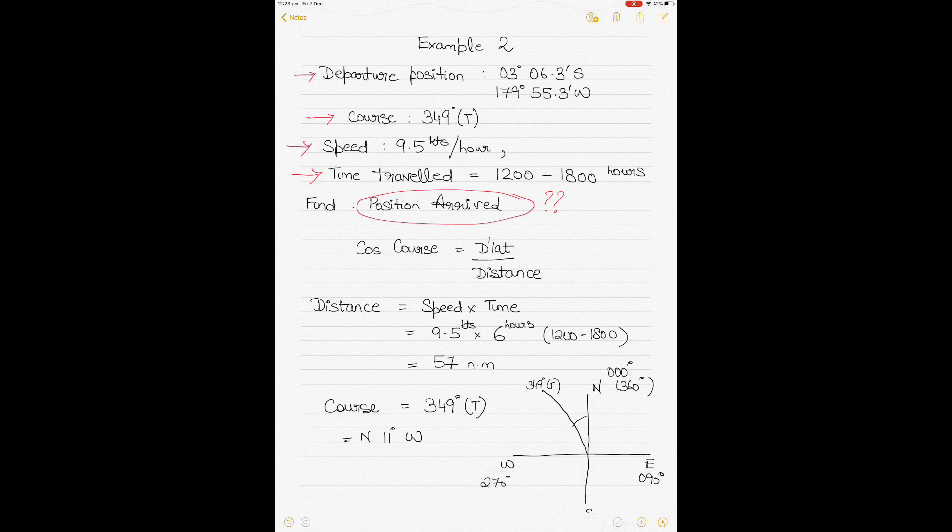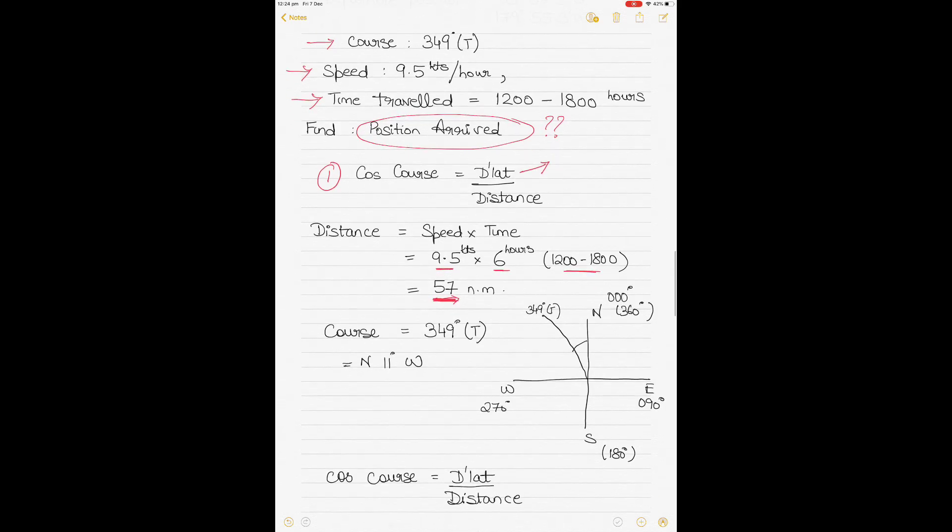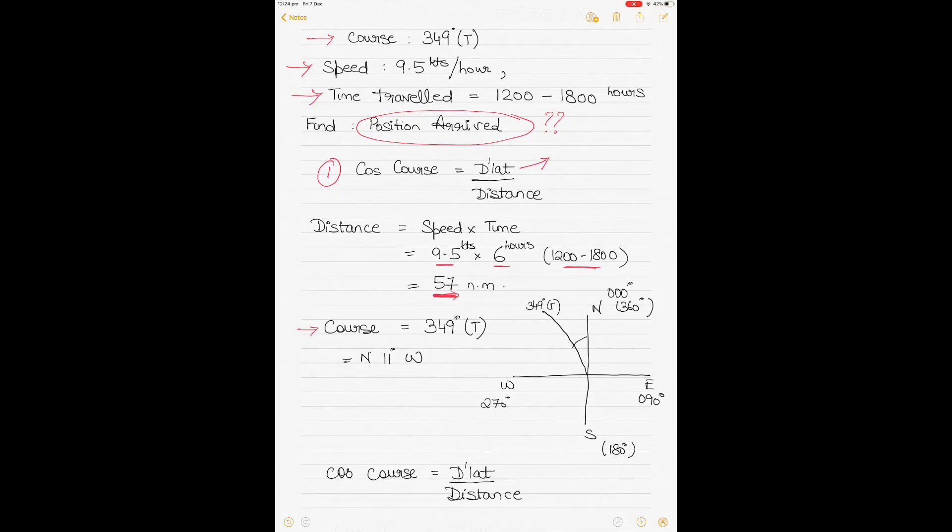Let's first start with cos(course) equals d lat over distance. We take this formula because we need to find the d lat. If we get the d lat, we can apply it to the departure position and find out our port of destination latitude. First, let's calculate the distance. Distance equals speed multiplied by time. Speed was 9.5 knots as given in the question. The time traveled is six hours because we travel from 1200 to 1800 hours. Six times 9.5 gives us 57 nautical miles as the distance.